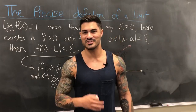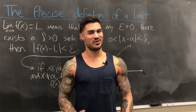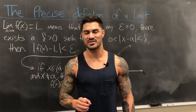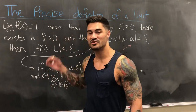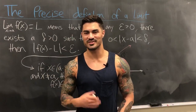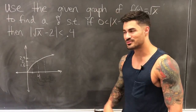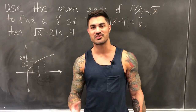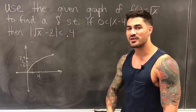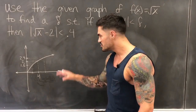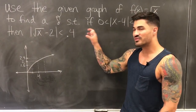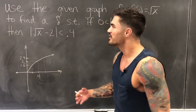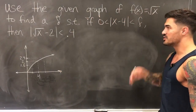This is a hard topic to explain. We're going to do two examples of common problems you'll see in a calculus class — including using this definition to prove a limit exists. Our first example: use the given graph of f(x) = √x to find a delta such that if 0 < |x − 4| < delta, then |√x − 2| < 0.4. Recognizing the form: our a is 4, f(x) is √x, L is 2, and epsilon is 0.4.